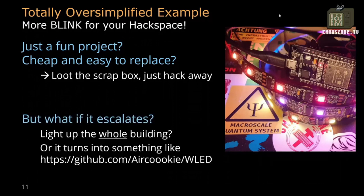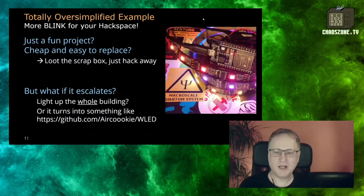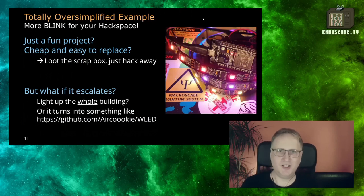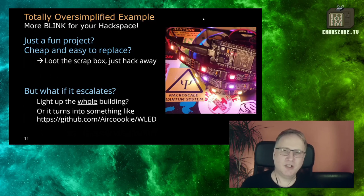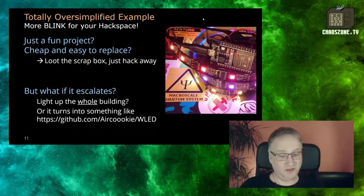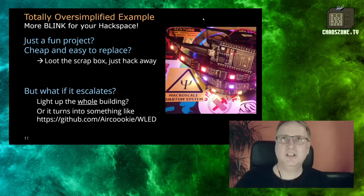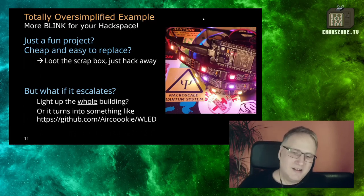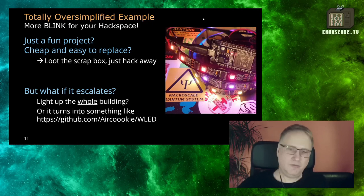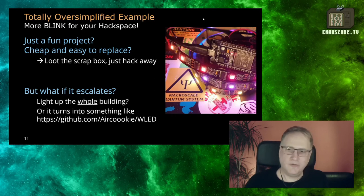But what happens if this project escalates into something bigger? Imagine you want to light up a whole building, or light up an assembly at the next camp, where you have not one LED stripe but 100 or more. Or if it turns into an open source project for dealing with those LED stripes — like WLED from aircookie or something similar, which is a really nice project. If that's what you build, evolving over years, cared for by a community of developers, supporting different kinds of LEDs and user extensions, then it's time to think about architecture.